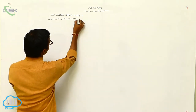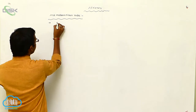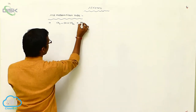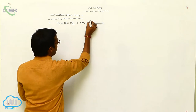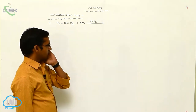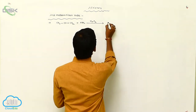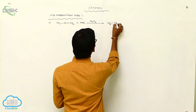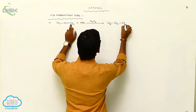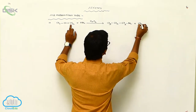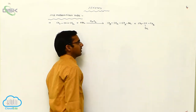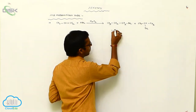Anti-Markovnikov rule: here CH3CH double bond CH2 (propene) is reacted with HBr in the presence of hydrogen peroxide. The alkene reacted with HBr in presence of hydrogen peroxide gives two types of products, but the negative charged particle is attached to the more number of hydrogen atoms. The products are CH3CH2CH2Br (1-Bromopropane) and CH3CHBrCH3 (2-Bromopropane).